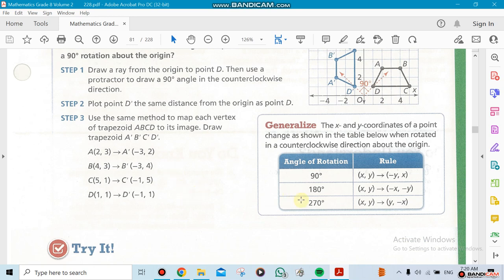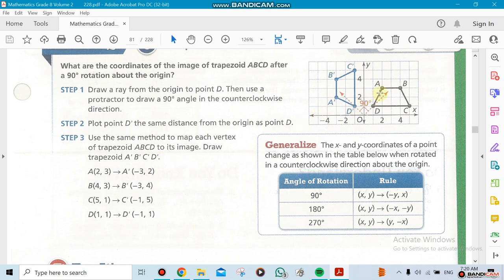There are rules you have to memorize for 90-degree rotation. Notice that your X and Y switch places—X becomes Y and Y becomes X—and you switch the sign of the first term. So (X,Y) becomes (-Y,X). For example, look at (2,3): it becomes (-3,2). That's exactly following the rule.